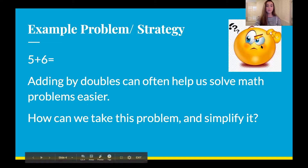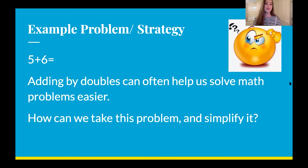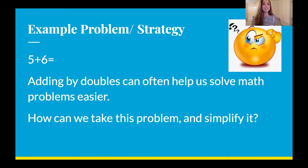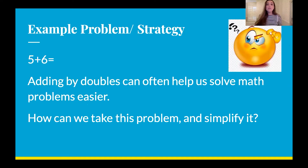Here's our example problem that we are going to start out with: it is five plus six. Adding by doubles can often help us solve math problems easier. So when you're looking at the problem five plus six, how can we simplify that? What do you think I mean when I say making doubles? What do you think this strategy is? Maybe you have learned about this before, maybe you haven't — just take a guess in your head and think: what could I mean by making doubles?